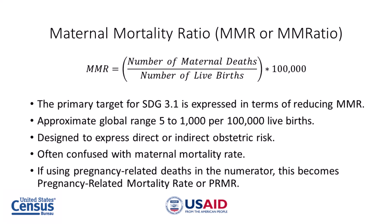By putting live births in the denominator, we may be overestimating risk — denominators should be larger and include pregnancies that do not result in live births. The MMR is often confused with maternal mortality rate, which is why some prefer to write it as MM ratio. If you only have pregnancy-related deaths and do not have cause-of-death data to exclude incidental or accidental deaths, you can use the number of pregnancy-related deaths in the calculation. But if you do that, you are producing the pregnancy-related mortality ratio, or PRMR, instead of maternal mortality ratio.